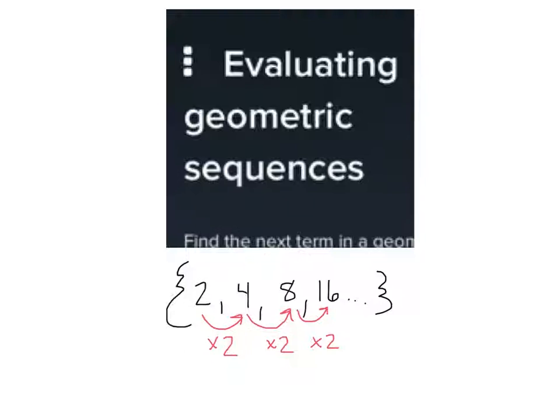I just told you arithmetic. A geometric sequence is when you multiply or divide by the same amount each time. Okay, let me give you another geometric sequence. Let's say I have 10, and then 5, and then 2.5.